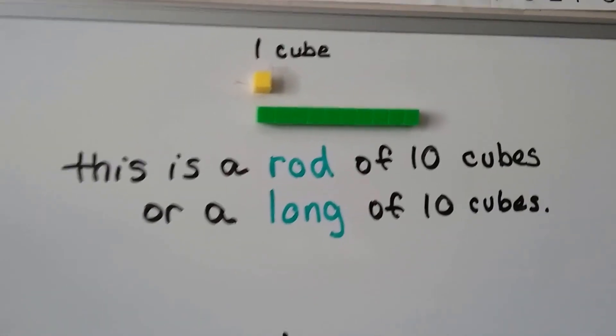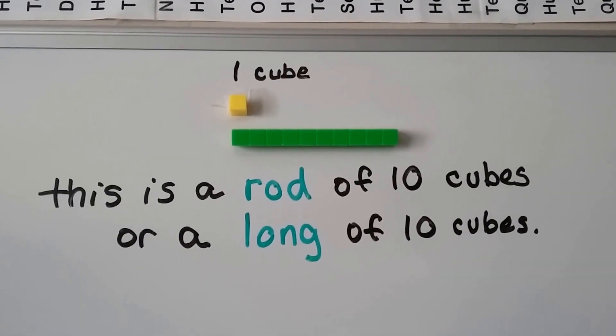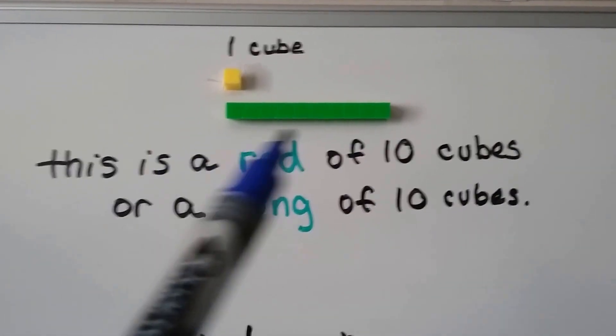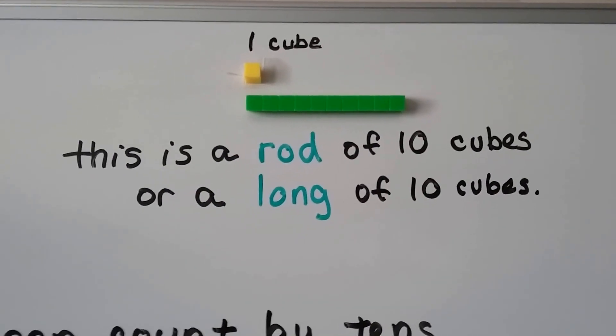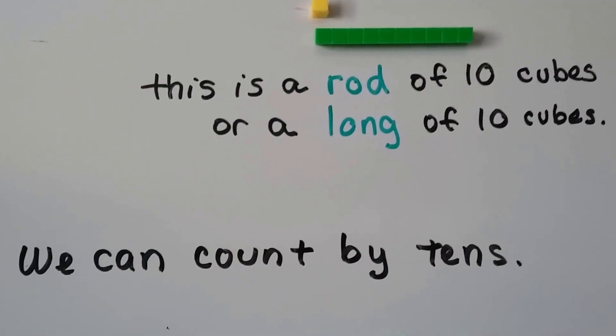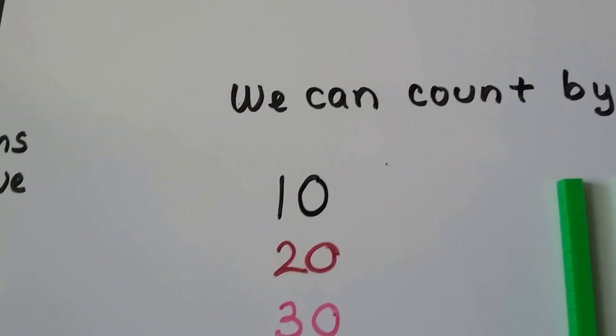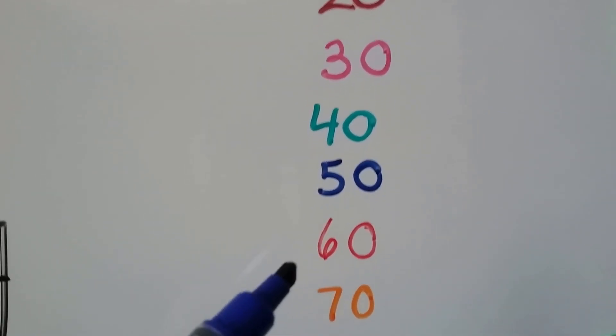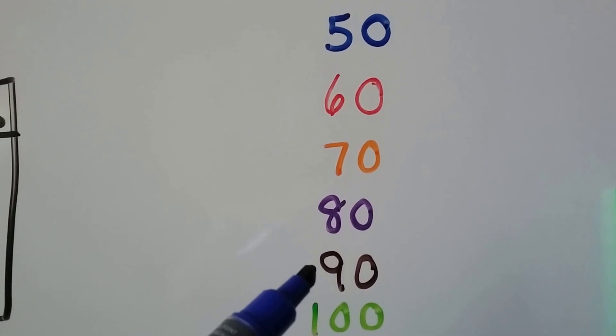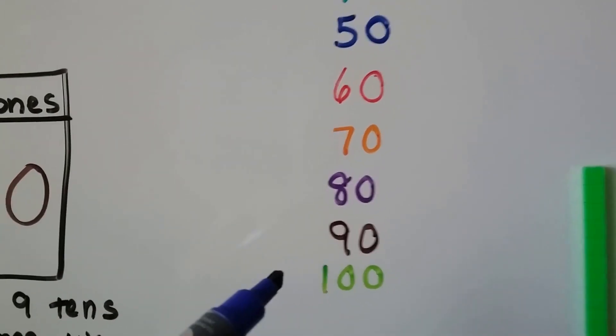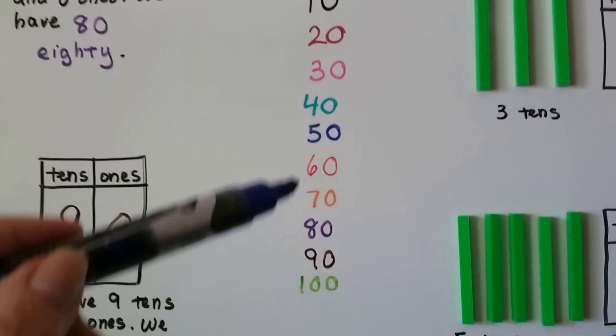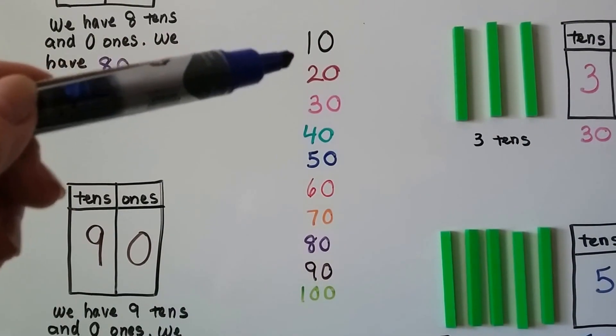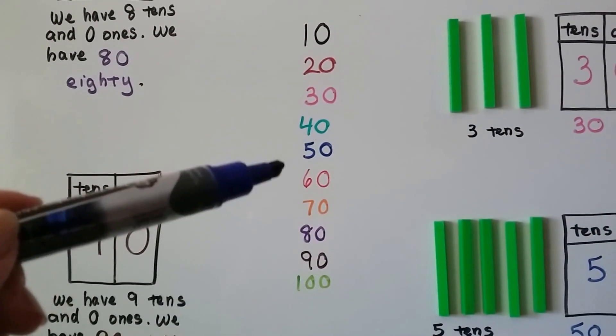Now I'm going to show you these. This yellow one, that's a cube, that's one unit. This is a rod of 10 cubes, it's also called a long of 10 cubes. And we can count by tens: 10, 20, 30, 40, 50, 60, 70, 80, 90, 100. Now if you look at these, you can see the pattern. All the ones places are zero and the tens places count up: one, two, three, four, five, six, seven, eight, nine, ten.